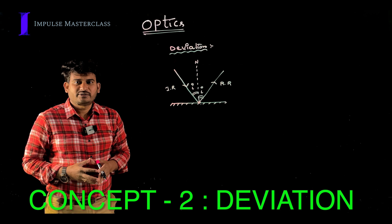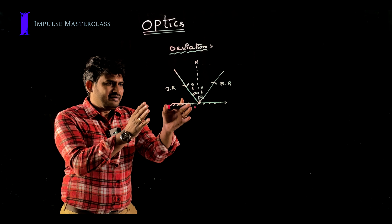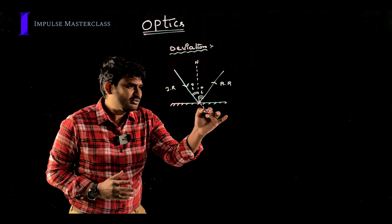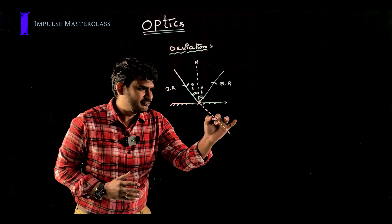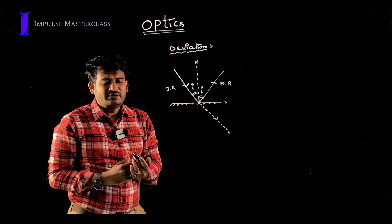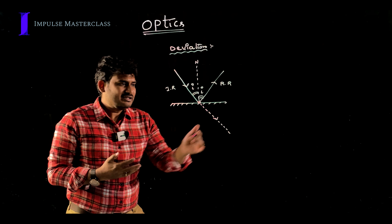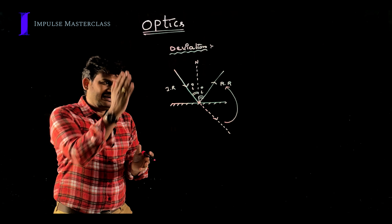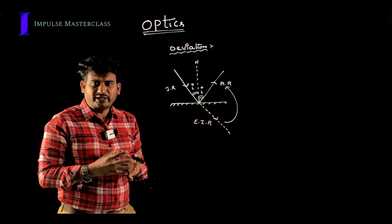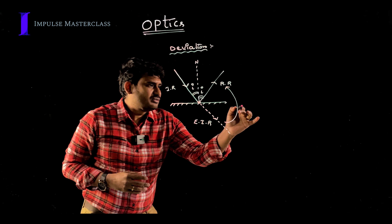Let's understand the deviation due to a single plane mirror. Consider a plane mirror with an incident ray. If the plane mirror were not there, that incident ray would go in a straight line without any deviation. But due to the plane mirror, the light ray is deflected. The angle by which the incident ray is deflected is called deviation — the angle from the extended incident ray (EIR) to the reflected ray.